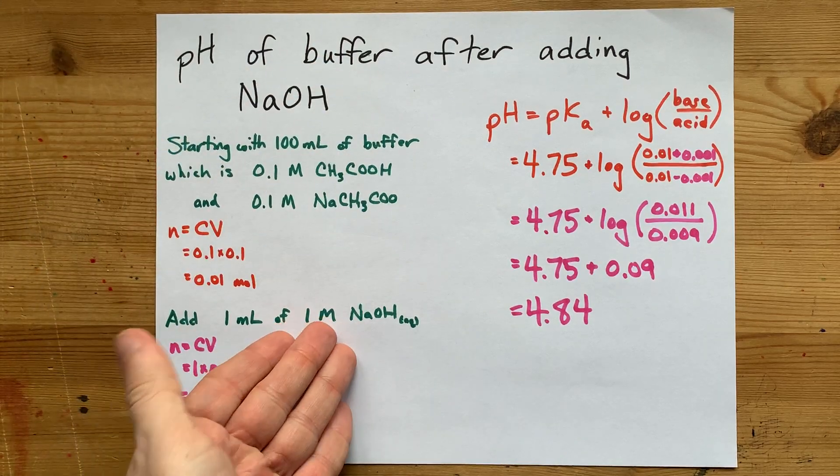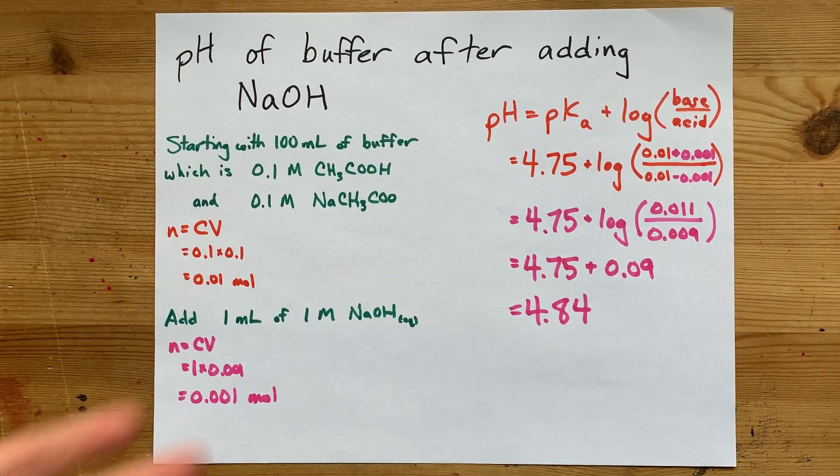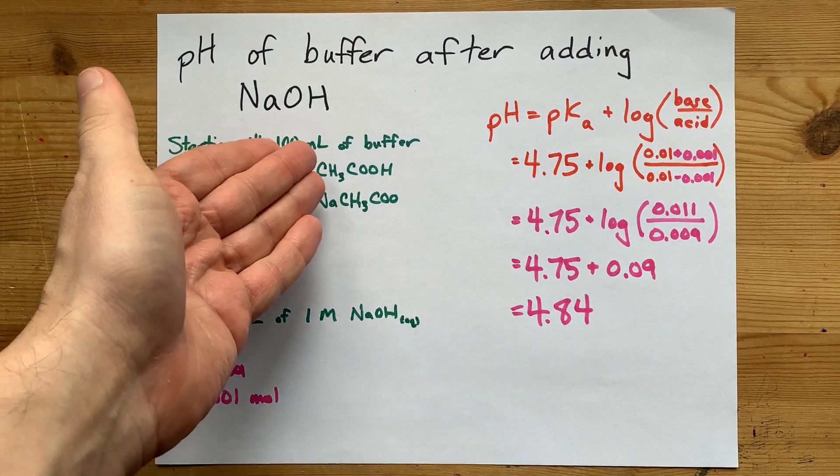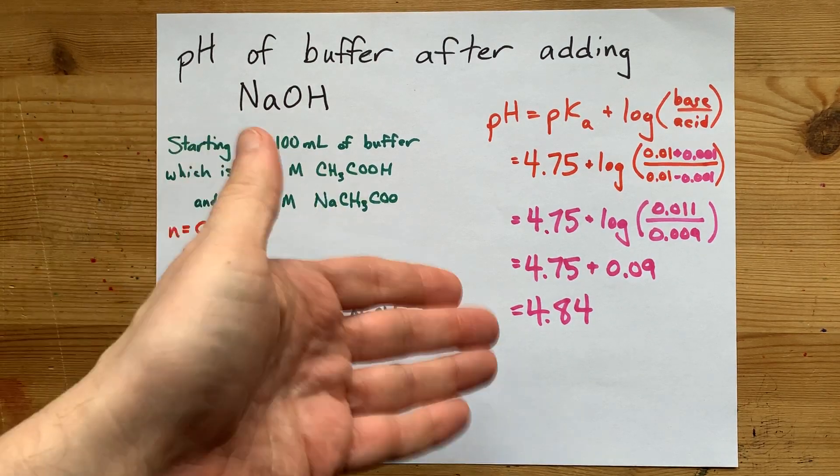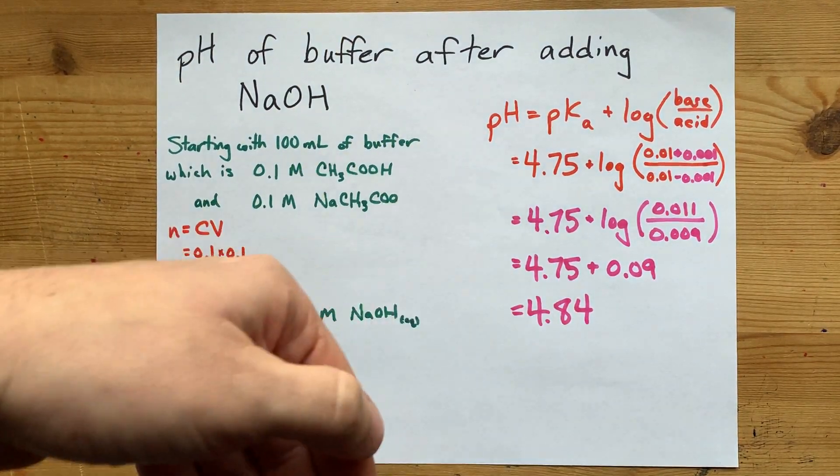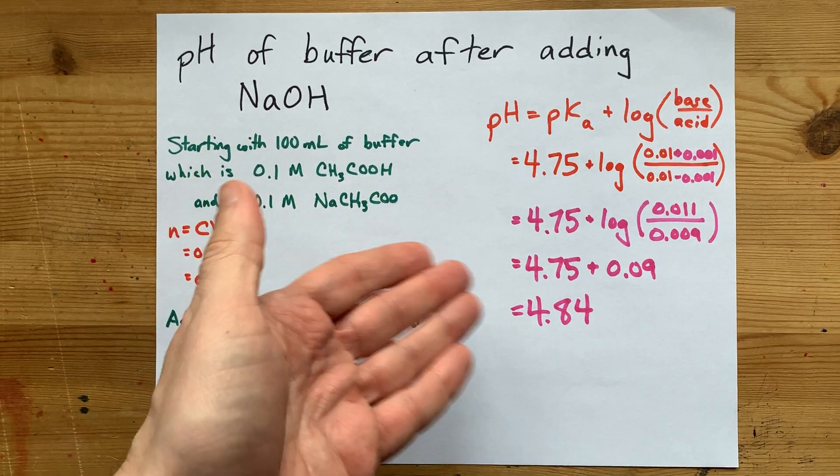Buffers are resistant to changes in pH. Although, of course, if you add so much sodium hydroxide that you get rid of all the weak acid, then you don't even have a buffer anymore. And so you can't use this equation. And of course, your pH is going to rise by quite a lot.